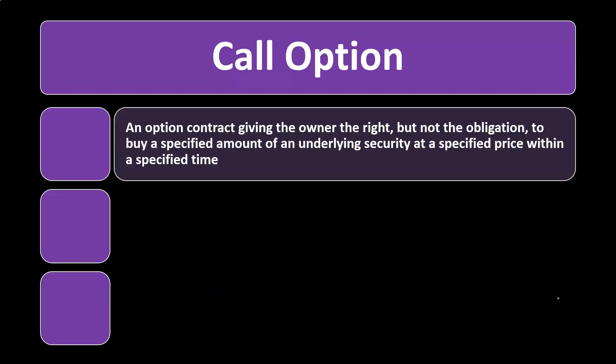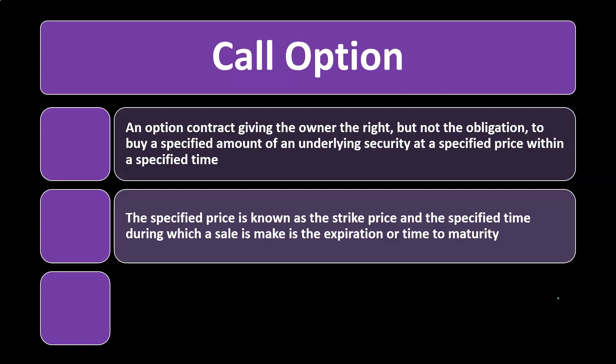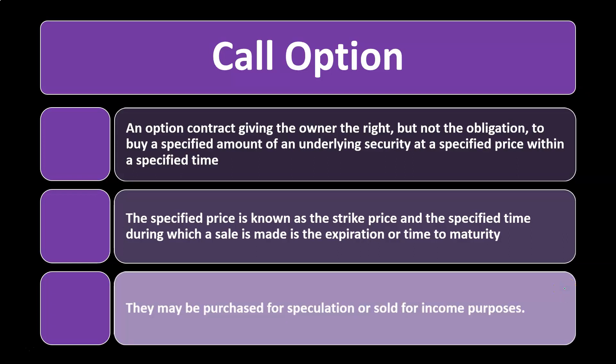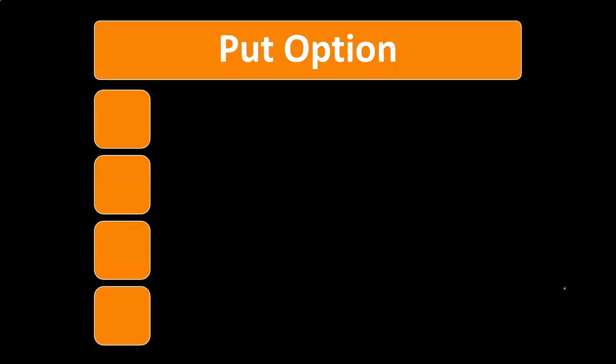A call option is an option contract giving the owner the right, but not the obligation, to buy a specified amount of an underlying security at a specified price within a specified time. The specified price is known as the strike price, and the specified time during which a sale is made is the expiration or time to maturity. They may be purchased for speculation or sold for income purposes.